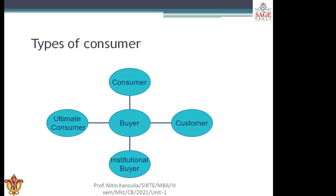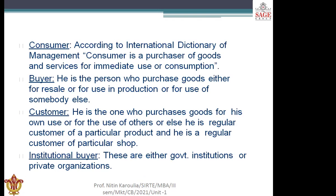Let us first understand the basic types of customers. Consumers can broadly be taken into four categories: the consumer, the customer, the institutional buyers, and the ultimate customers. According to the International Dictionary of Management, a consumer is a purchaser of goods and services for immediate use or consumption. For example, we take a bottle of mineral water, a toothpaste, or a bathing soap — we purchase it, go home, use it, and the product perishes. This is a consumer who purchases and consumes the product.